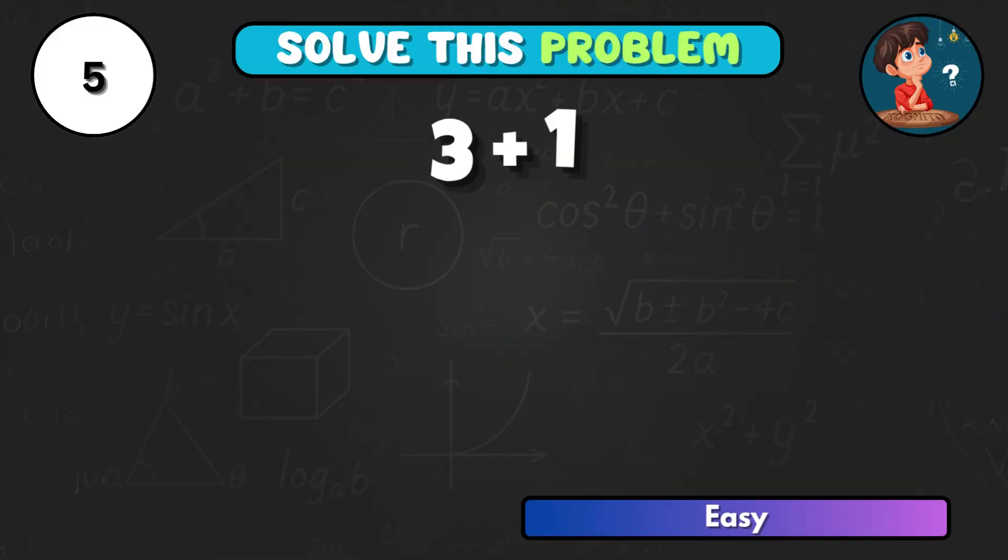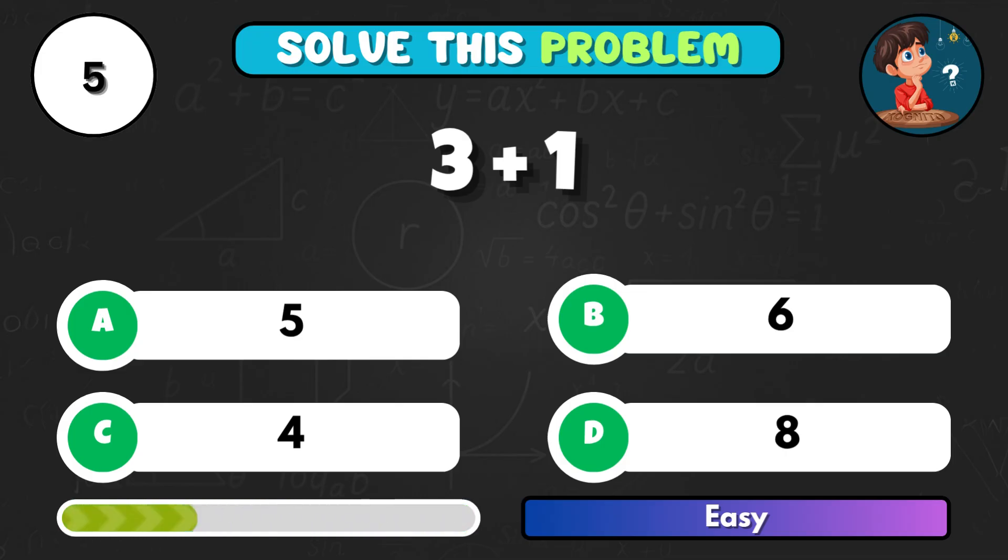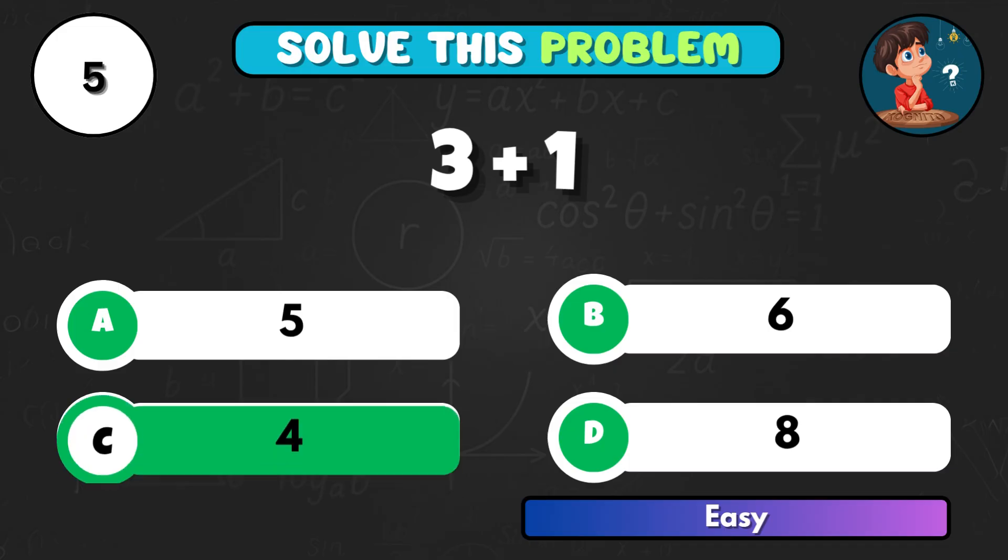Here's a simple one, what happens when you add 3 and 1? The correct answer is C, that's 4.